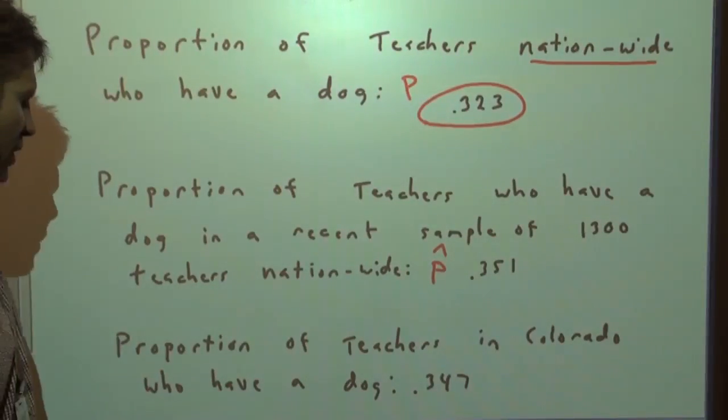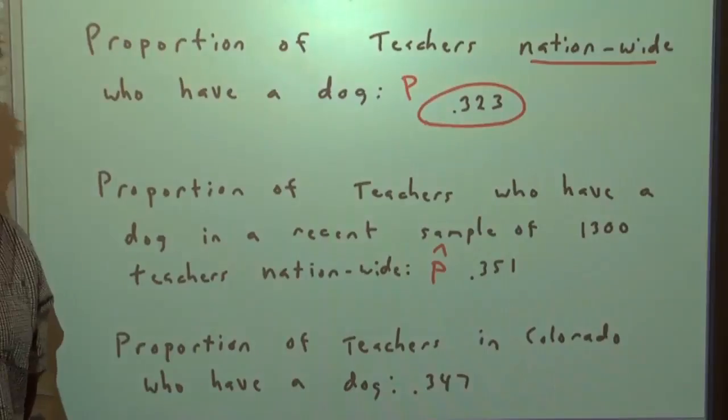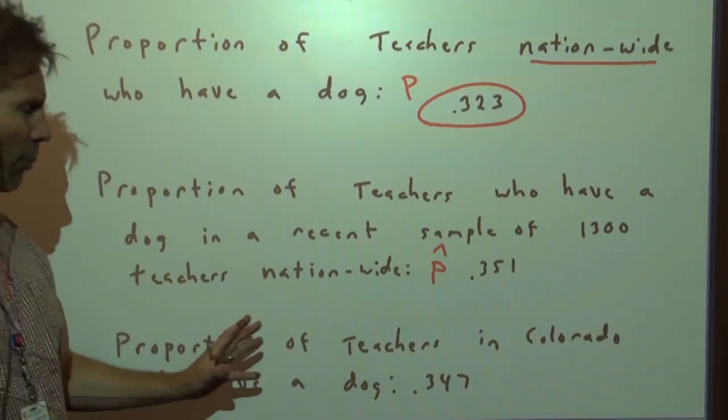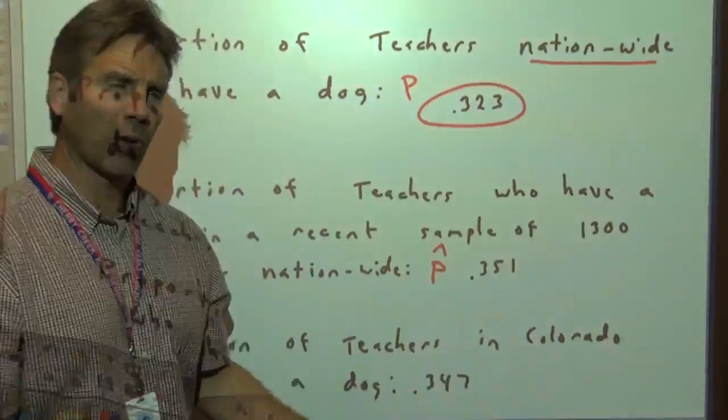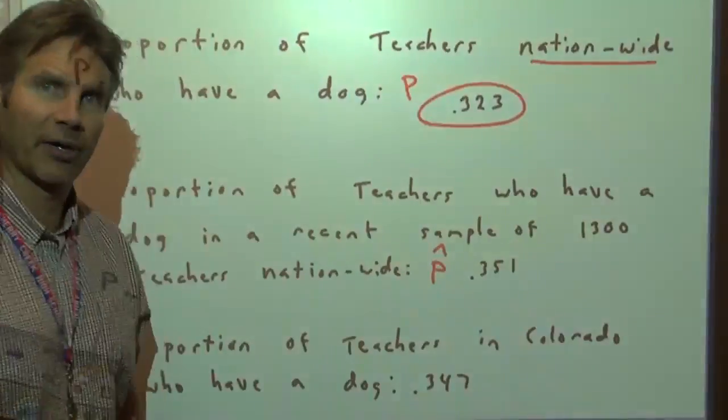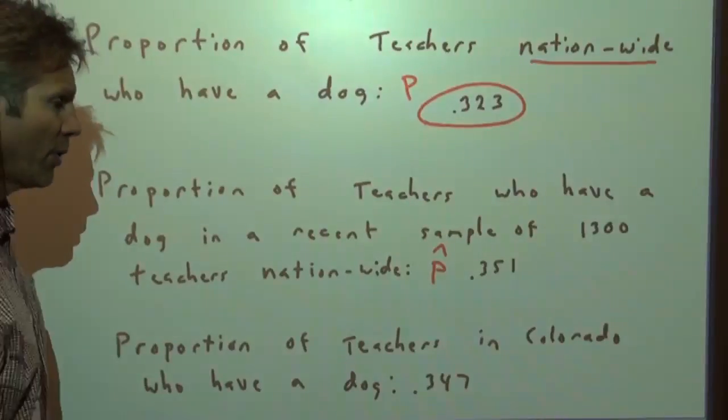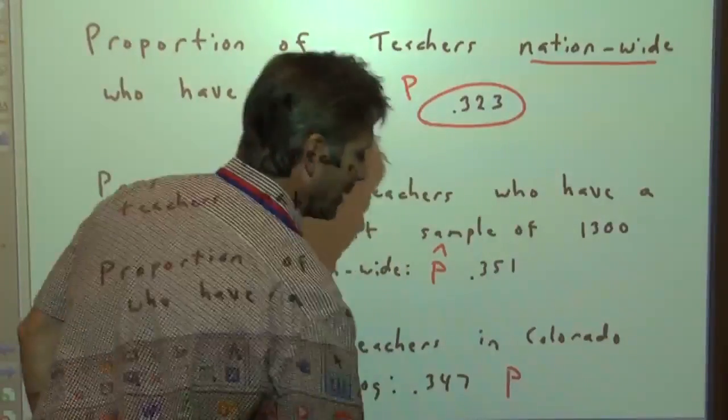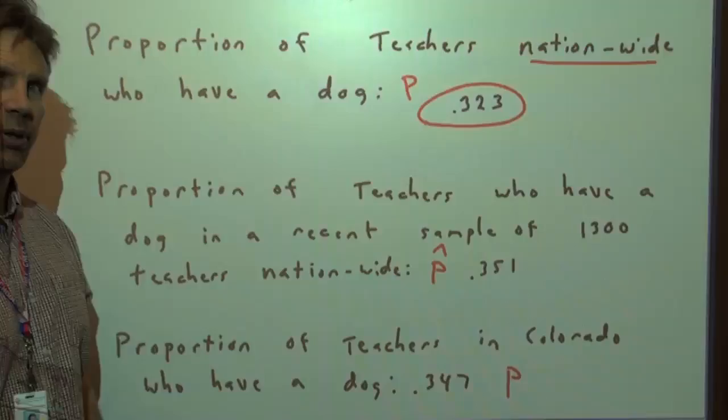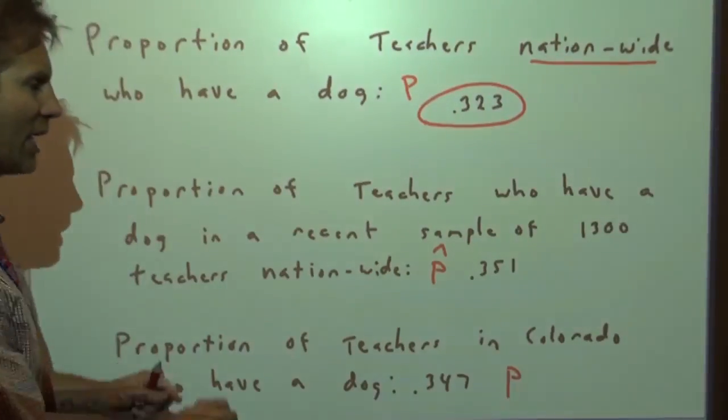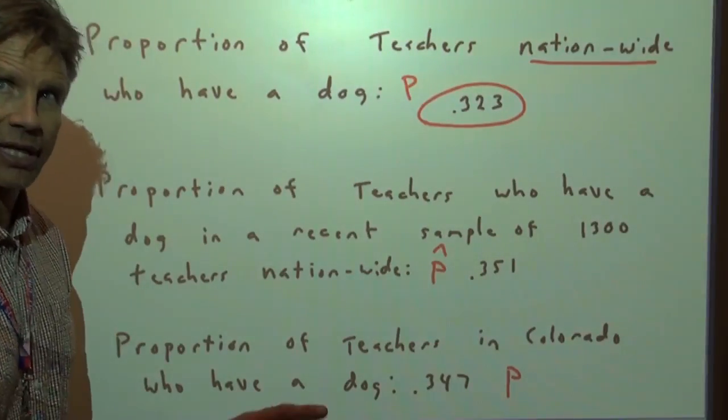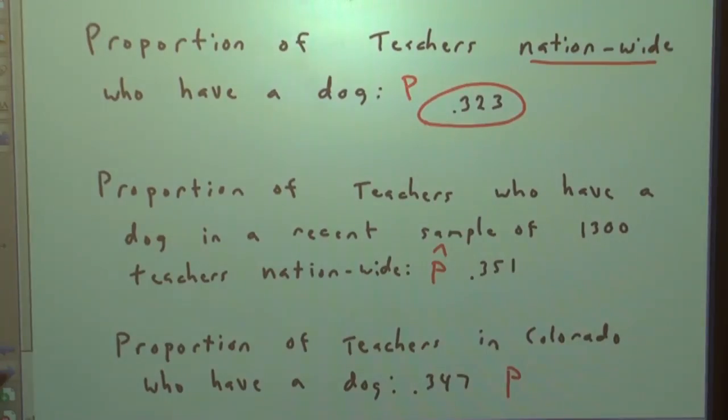What if we said the proportion of teachers in Colorado who have a dog is .347? Well, you know what? We're probably not taking a sample of the whole country because we're specifically talking about Colorado. So if we indeed have looked at all the teachers in Colorado, and this is the proportion, then this would be a population proportion P. It would be a parameter, not a statistic, because we looked at every teacher theoretically in the state of Colorado.